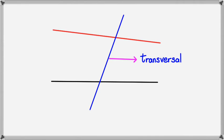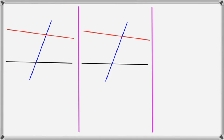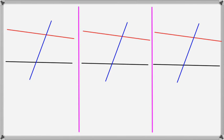When the lines actually cross, angles are created, and there are three types of relationships between the angles. We can see that in the next slide, and I'll show you each one of these relationships.